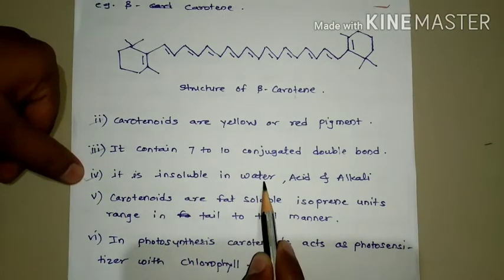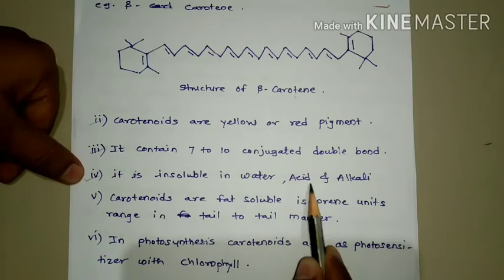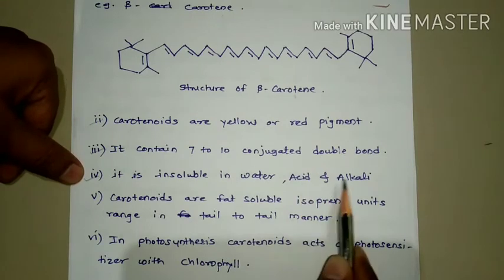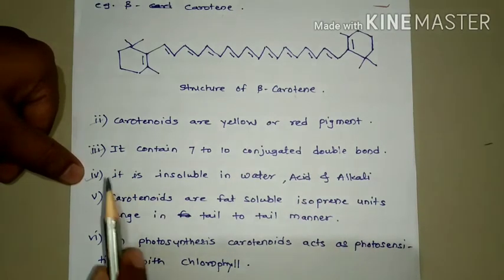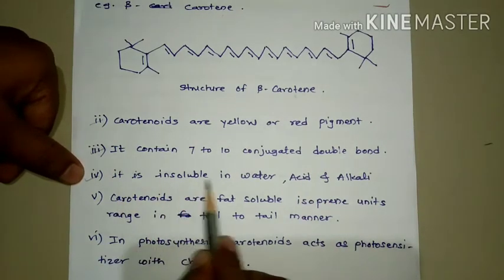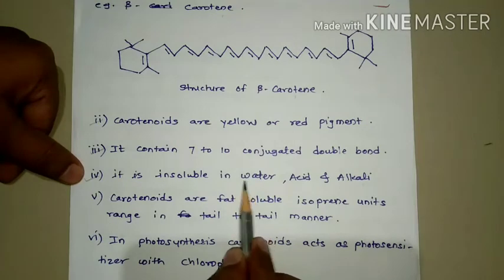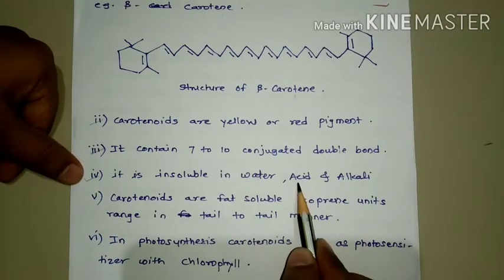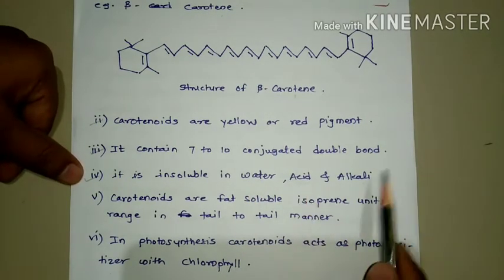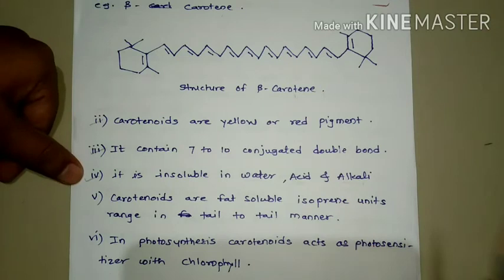Carotenoids are insoluble in water, insoluble in acid, and also insoluble in alkali.